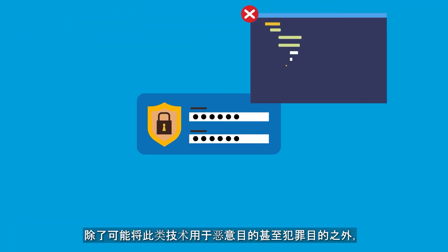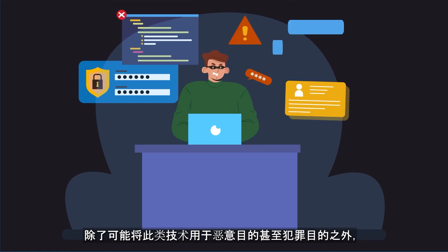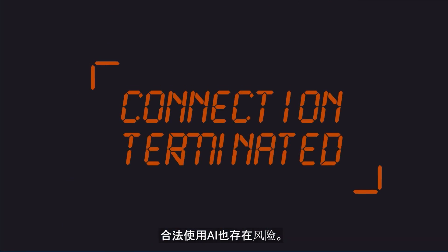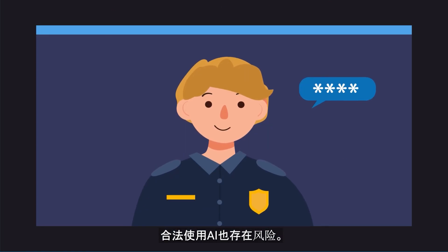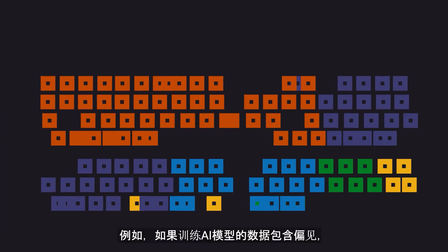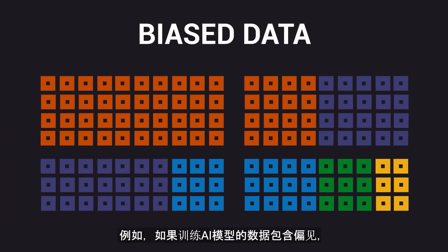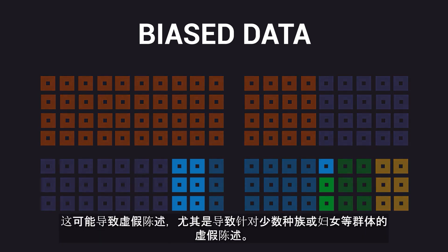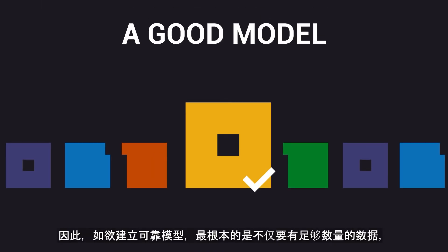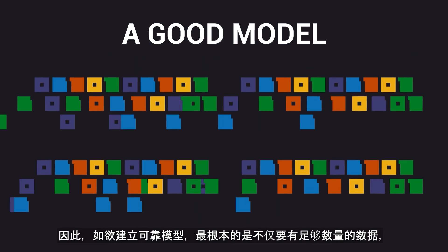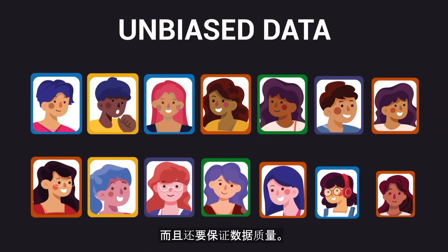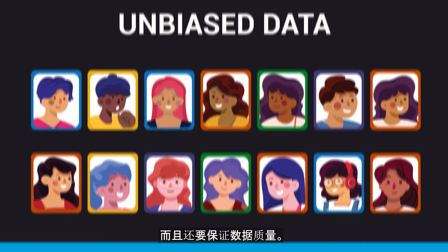Besides the potential use of such technology for malicious or even criminal purposes, there are also risks associated with the legitimate use of AI. For example, if the data on which the AI model is trained contains biases, the model will amplify that bias, which can lead to misrepresentation, especially for groups such as racial minorities or women. To have a good model, it is therefore fundamental that one has not only a sufficient quantity of data, but also that the quality of data can be ensured.